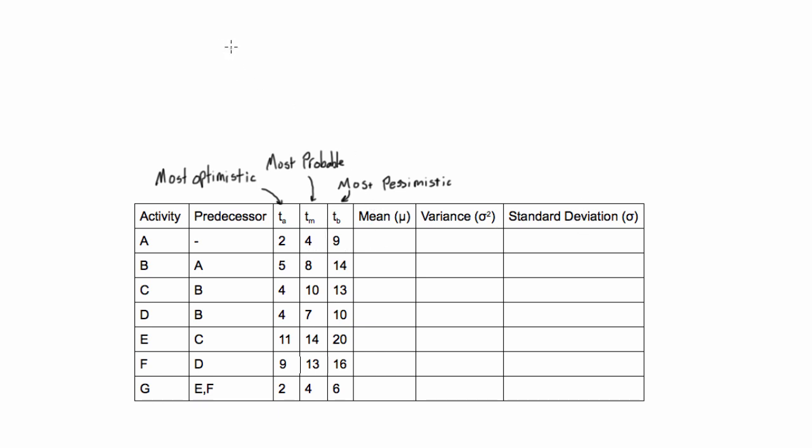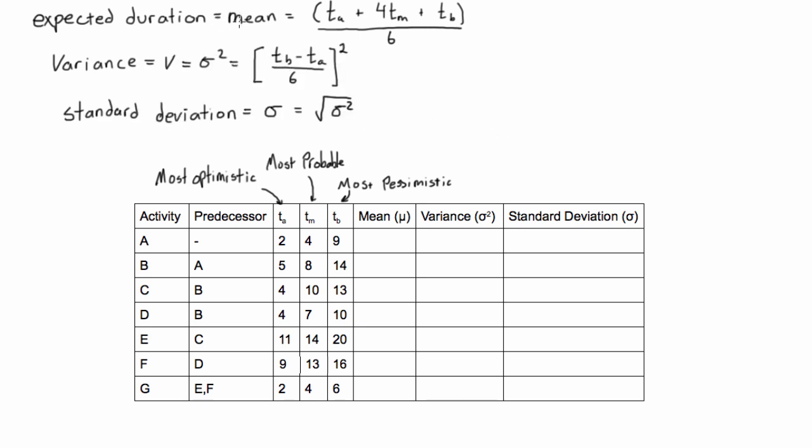So here are the formulas for the mean, variance, and standard deviation. So for expected duration, which is also the mean, we would have the formula being TA plus 4TM plus TB all over 6.